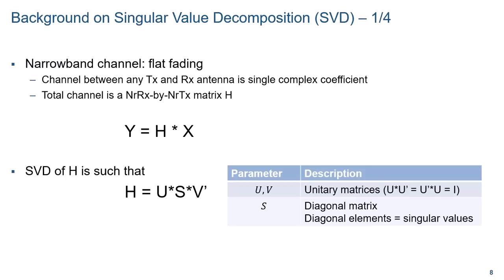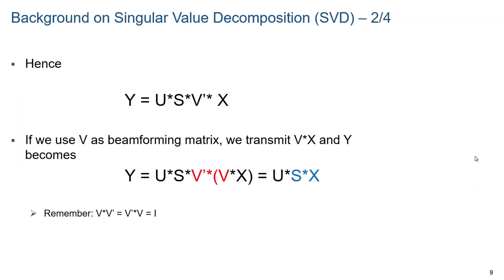For any matrix H, we have a guaranteed singular value decomposition of H as the product of U, S, and V transpose conjugate, where U and V are unitary matrices and S is a diagonal matrix. The diagonal elements of S are called singular values. We can rewrite the receive vector as Y = U S V^H X. And if we decide to transmit VX instead of X, the receive vector becomes U S X, because V is a unitary matrix.